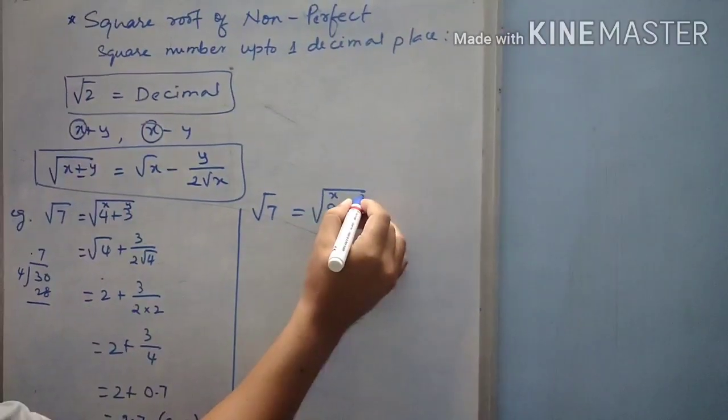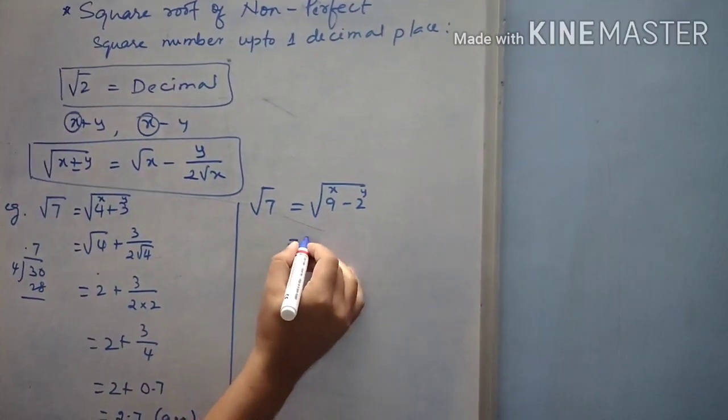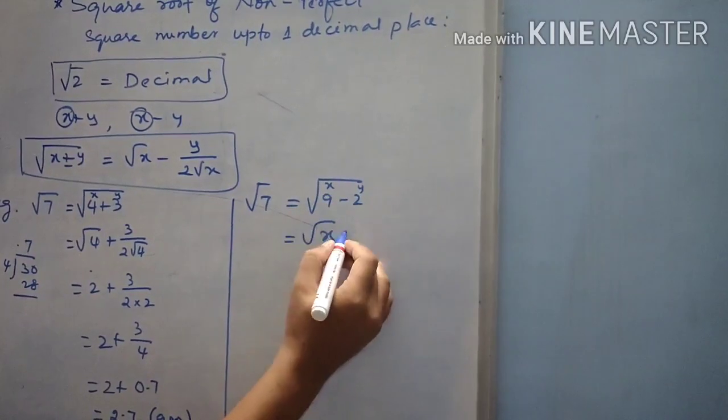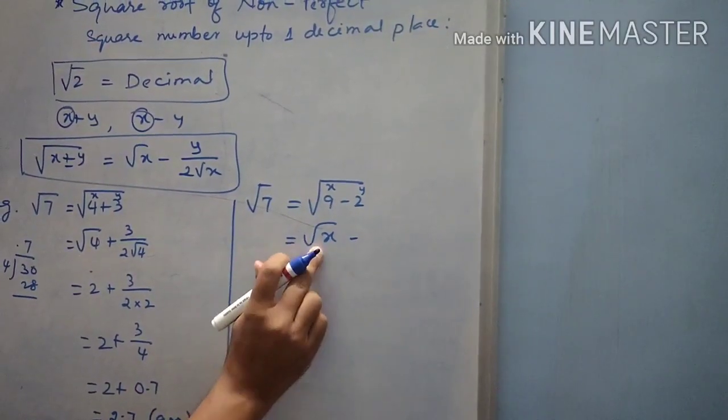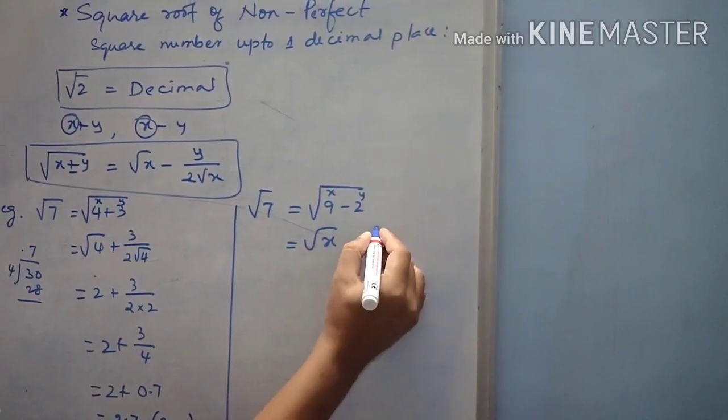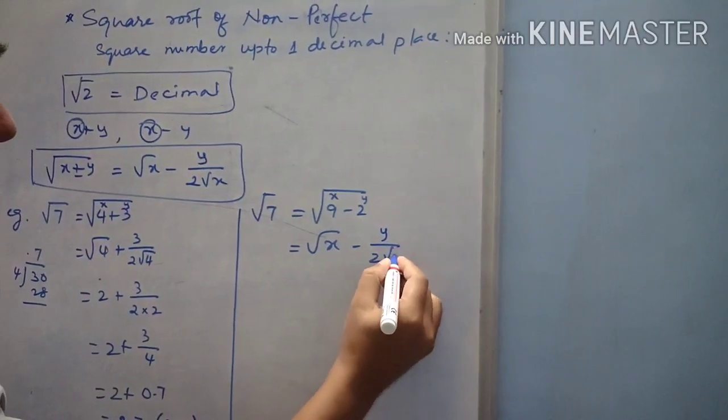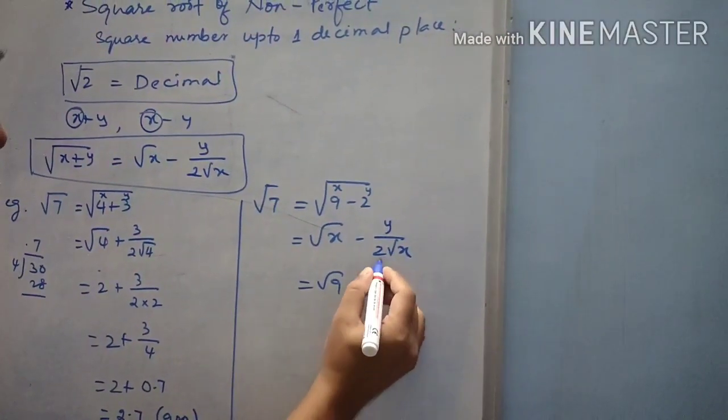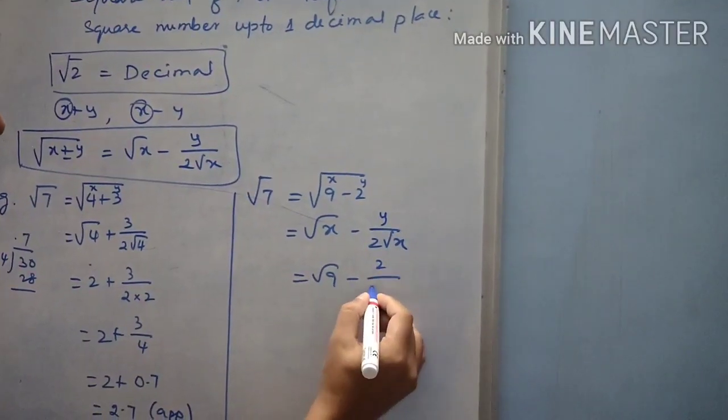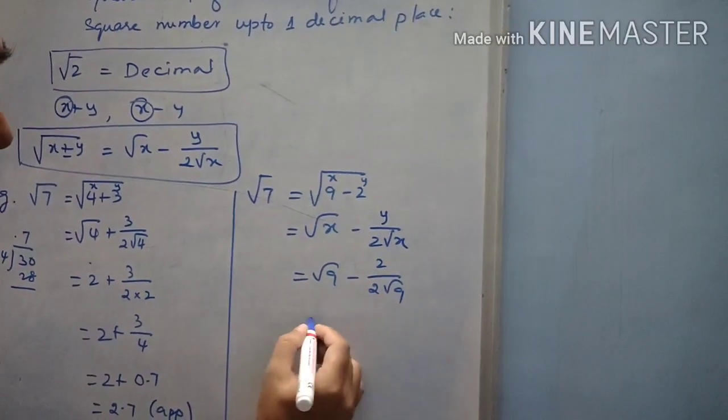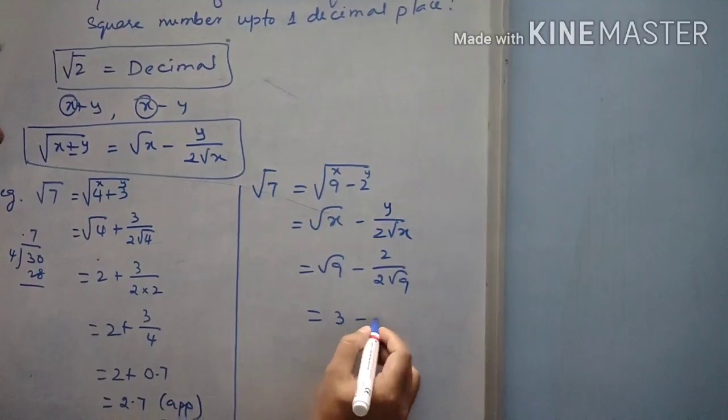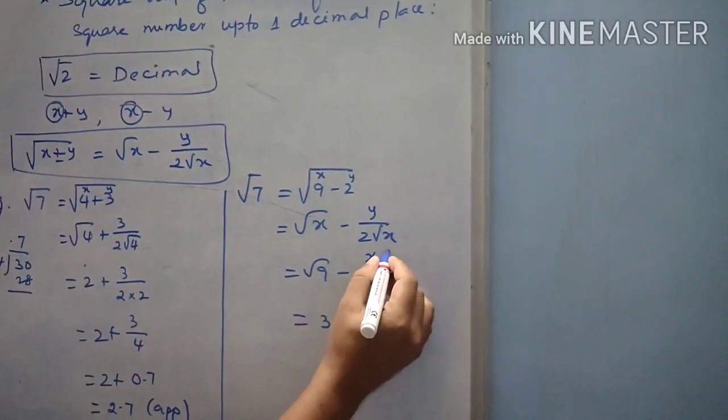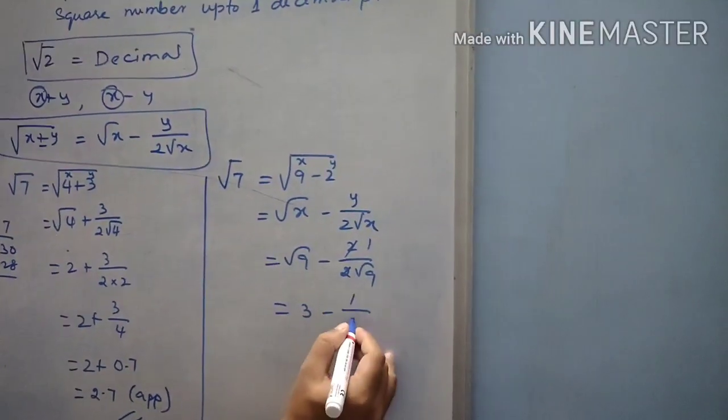So, 9 is the x, 2 is the y. Square root of x, here minus coming means here also minus. Square root of x minus y by 2 root x. x value is 9 minus y value is 2, 2 root 9. Square root of 9 is 3 minus 2 and the 2 cancelling 1. 1 by square root of 9 is 3.